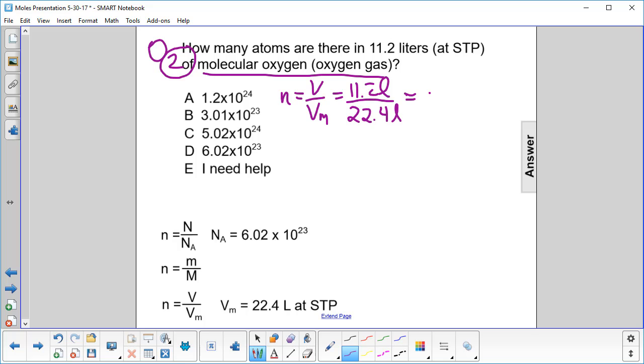So we have 0.5 moles of molecular oxygen. So how many moles of atoms do we have there? We have two oxygen atoms for every molecule, so we're going to have one mole of oxygen atoms.